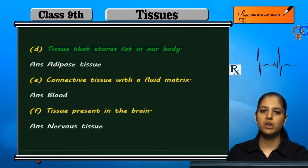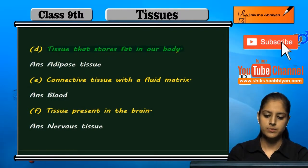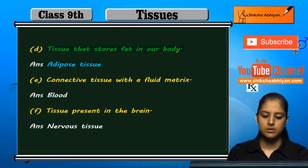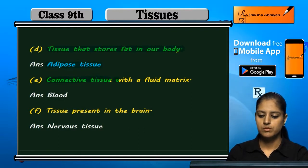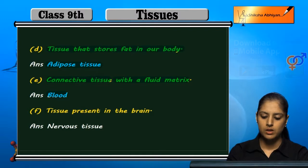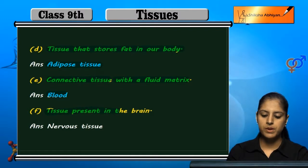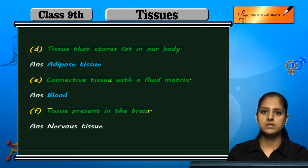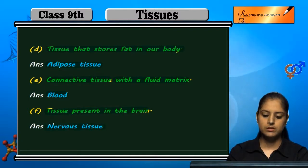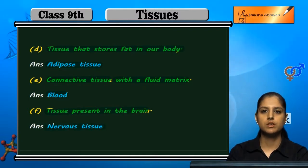...is adipose tissue. Connective tissue with a fluid matrix is blood. The tissue present in the brain is called nervous tissue.